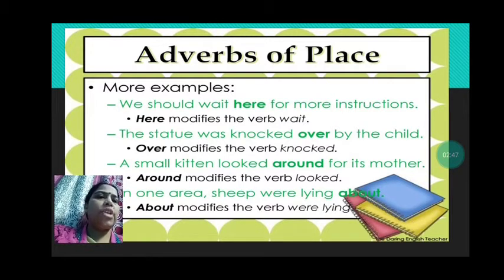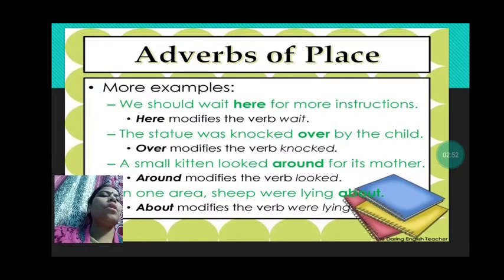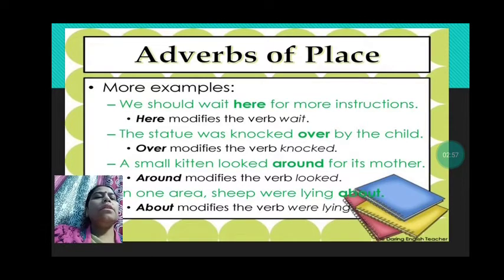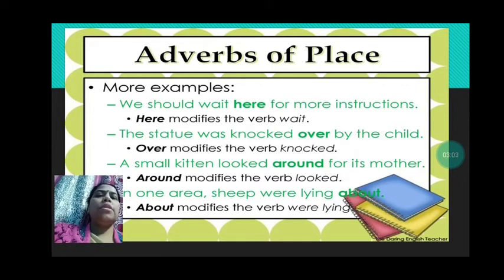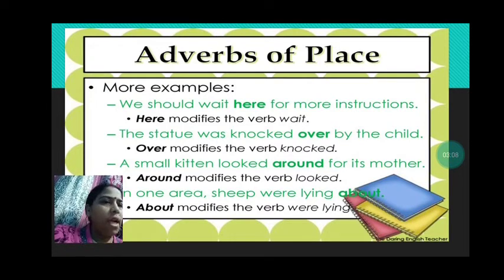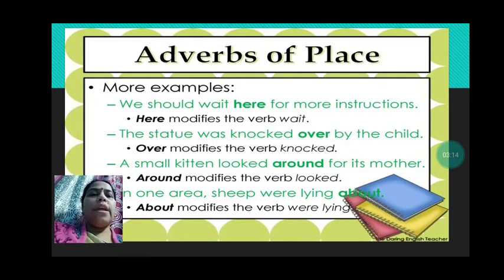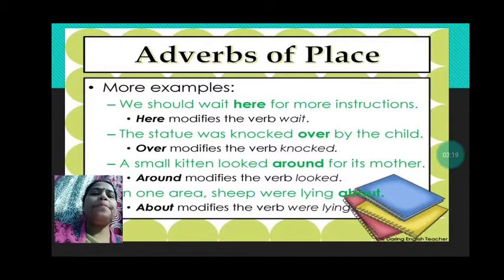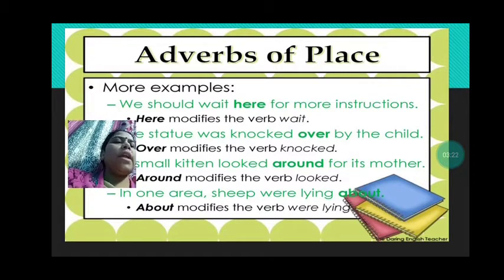The statue was knocked over by the child — so where was the statue knocked? It was knocked over. A small kitten looked around for its mother. Where did the small kitten look? It looked around. So 'around' is the adverb that modifies the verb 'looked'. In one area, the sheep were lying about — so 'about' modifies the verb 'lying'.